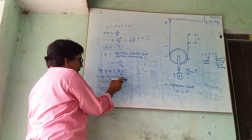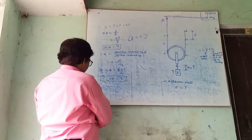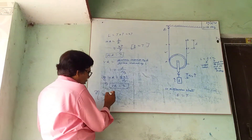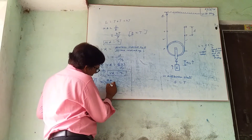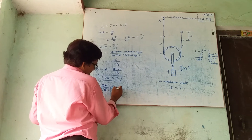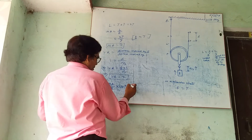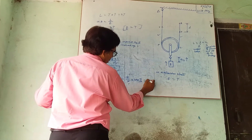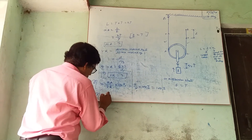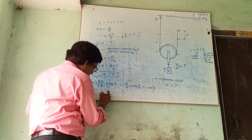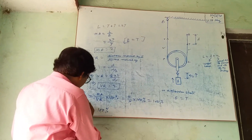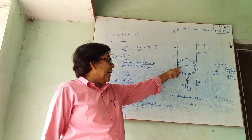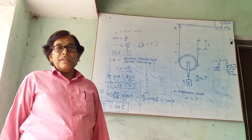Efficiency is equal to mechanical advantage by velocity ratio into 100 percent. Efficiency is equal to 2 by 2 into 100 percent, which equals 100 percent. So the efficiency of the single movable pulley is 100 percent. Actually, this 100 percent efficiency is for an ideal pulley which is weightless and frictionless.